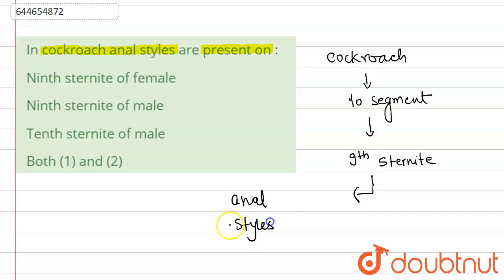In the case of males, the anal styles are present only in males, not in females. So the option of female is wrong, and both is also wrong. There are two options: ninth sternite of male or tenth sternite of male. As we discussed, it is present in the ninth sternite, so the correct answer is option B.